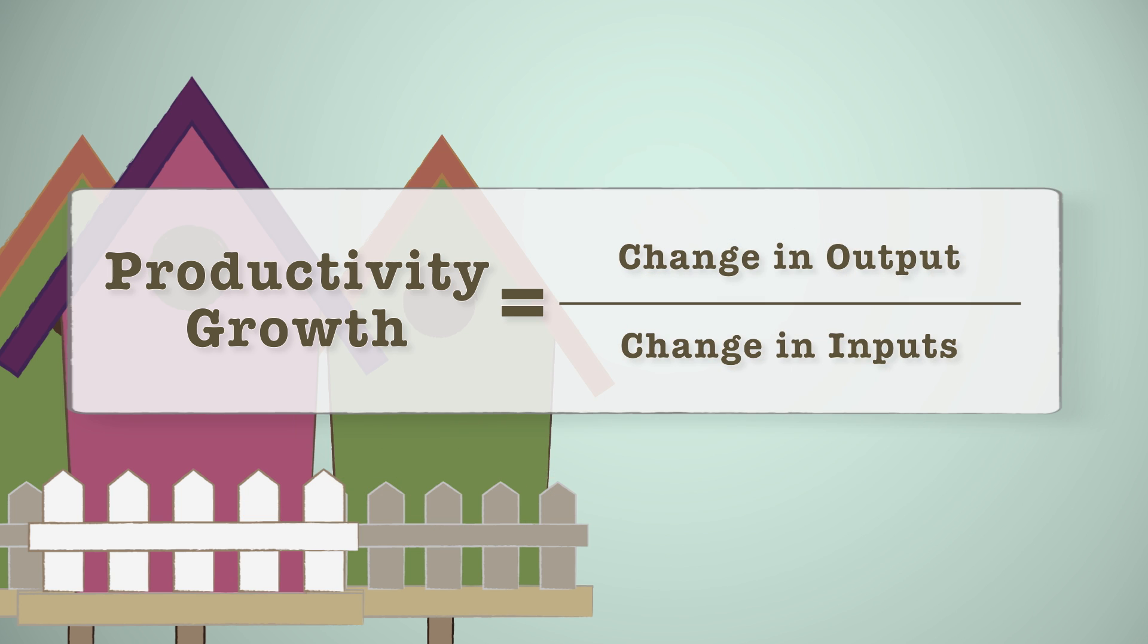Growth in productivity is measured by dividing the change in output over time by the change in inputs over time.